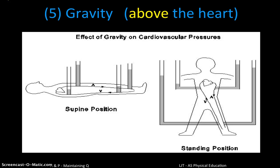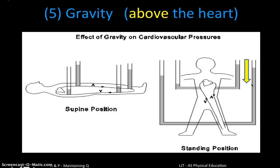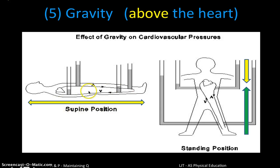Finally, gravity can be helpful in returning blood to the heart — but only when blood is above the heart level, allowing it to flow downward into the heart. Any blood in vessels below the heart is a problem; gravity works against it. Above the heart, gravity aids return; below the heart, we rely on the other four mechanisms. This is also why, if someone feels lightheaded, we lay them flat — it reduces the gravitational challenge and makes it much easier for blood to return to the heart.